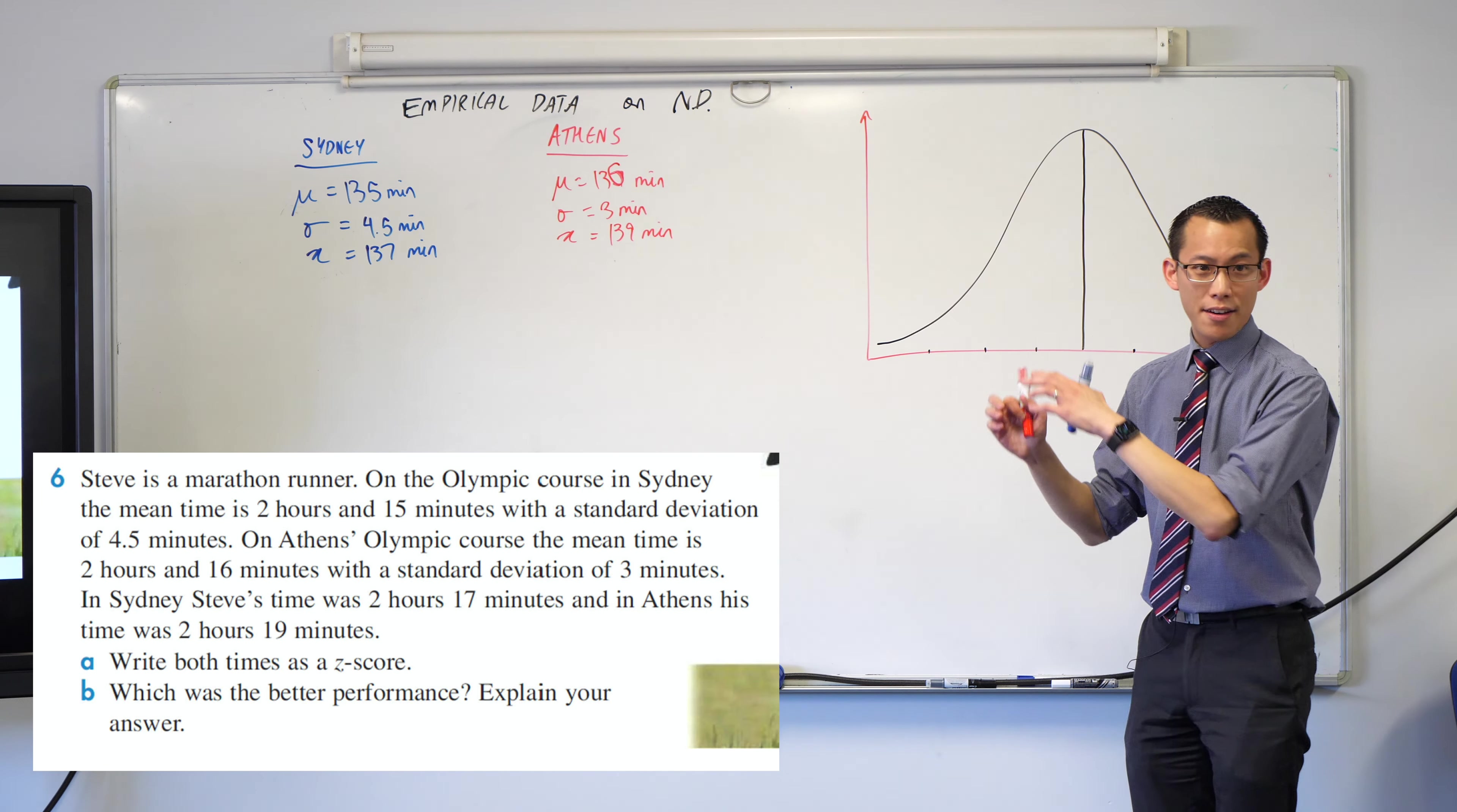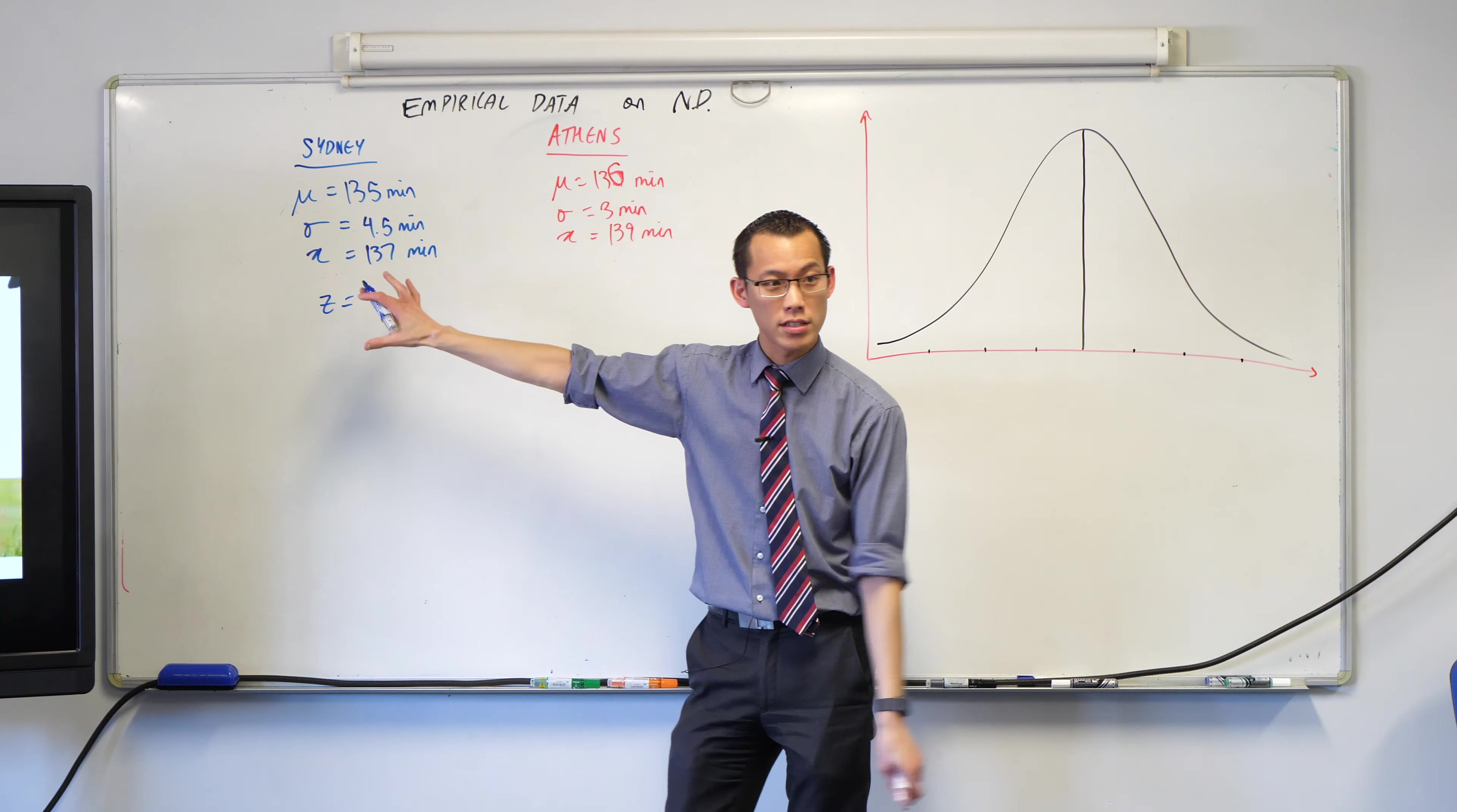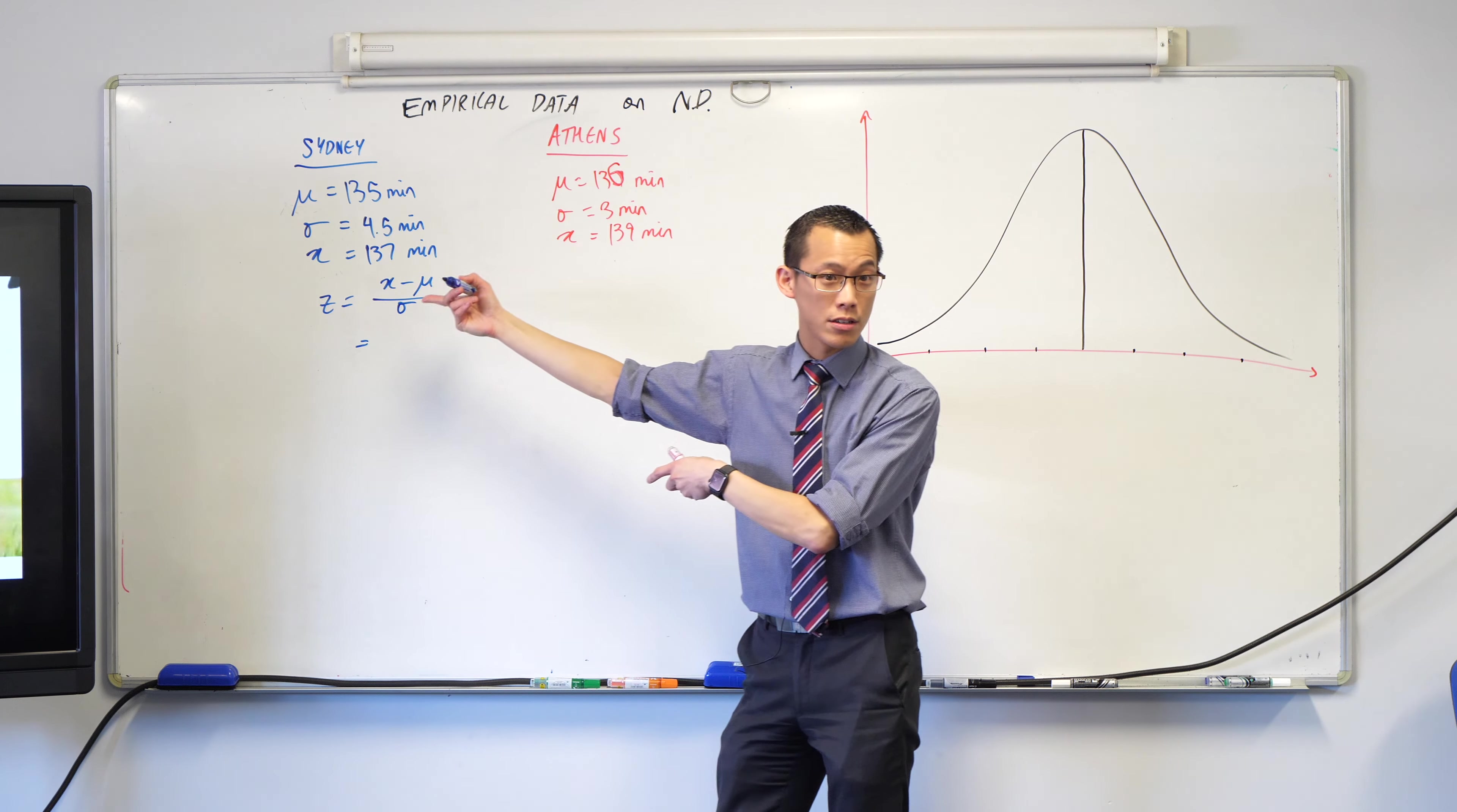This guy travels. Well, he's a marathon runner. We have all the pieces to get a Z-score. I've set this up so I don't confuse one μ with another or one σ with another. I'll write the formula. Z equals – it's a fraction. What's the numerator? X minus μ, very good. It's the difference between his score and the mean. Then we divide by standard deviation.